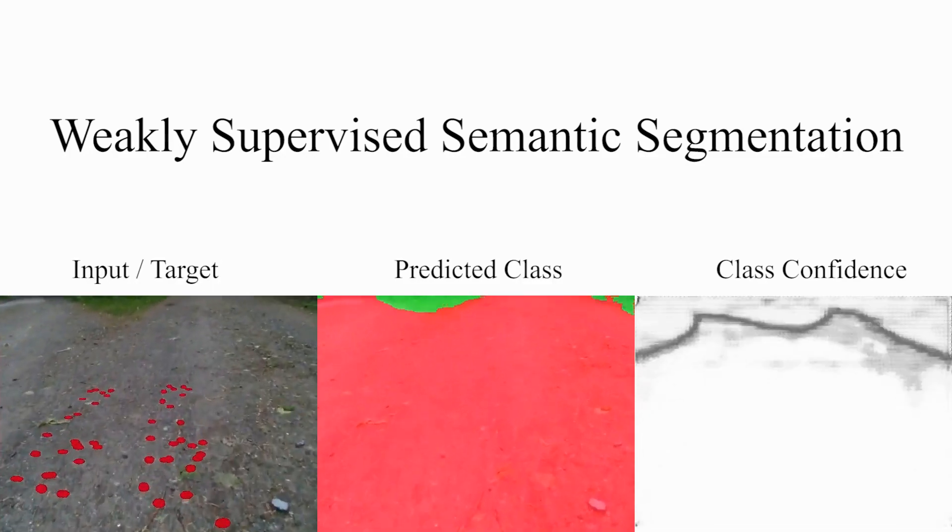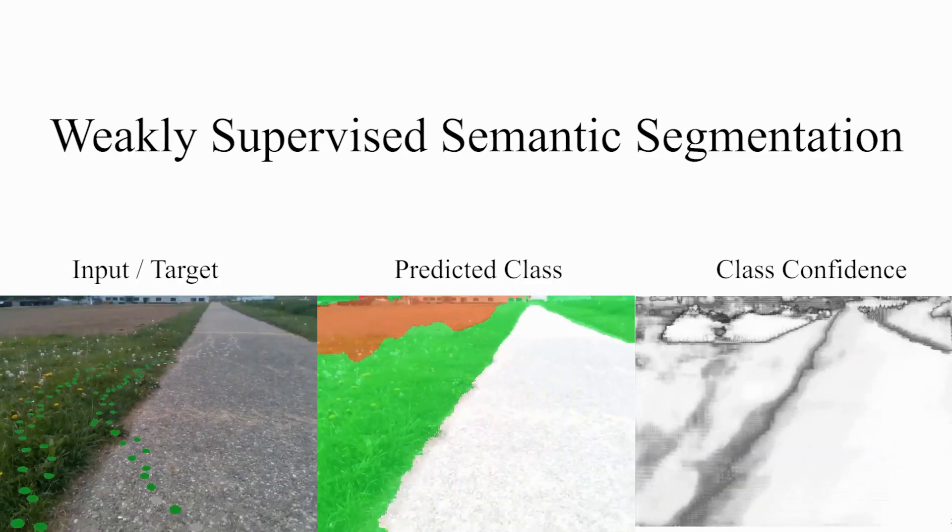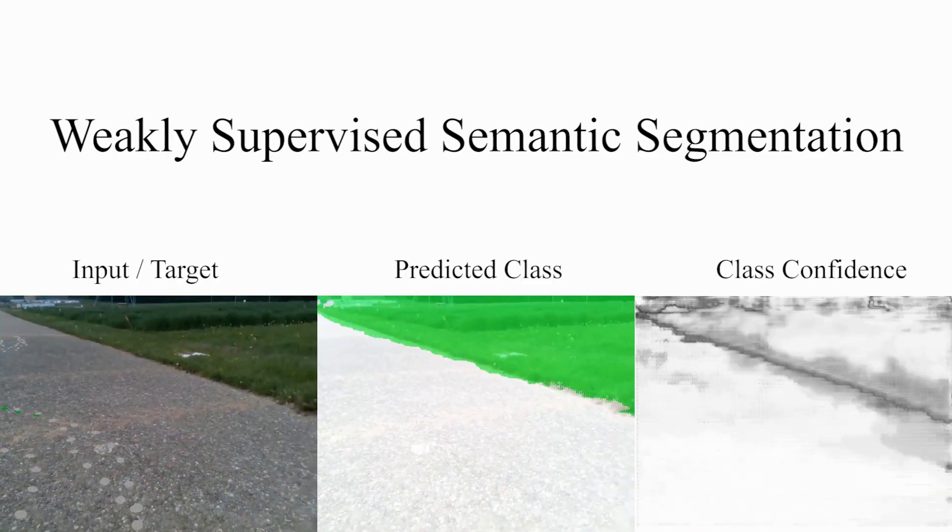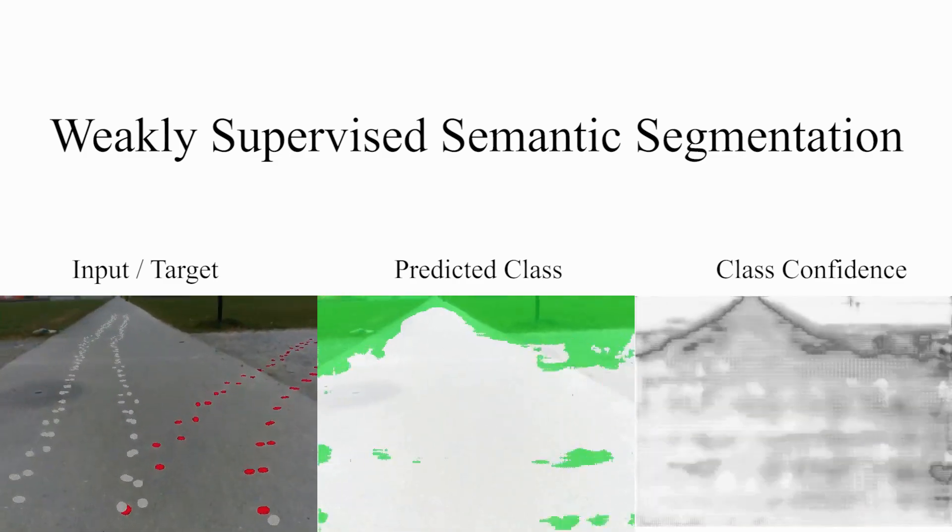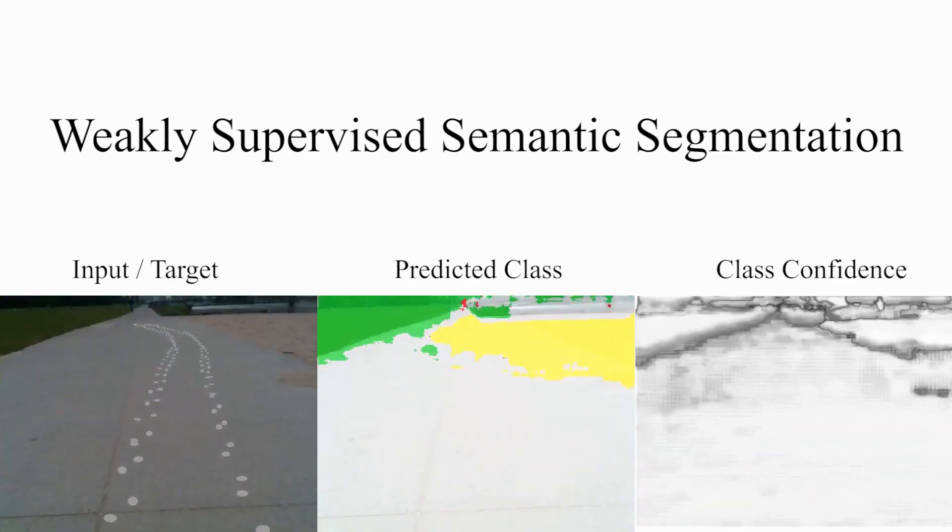This approach can also be used for weakly supervised learning, where sparse human input is used to label a large dataset with low effort and train a classification network to produce dense semantic segmentation.